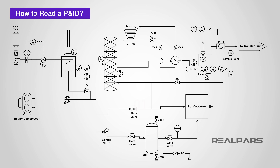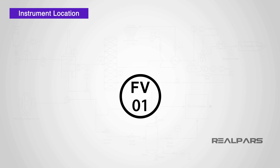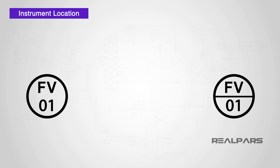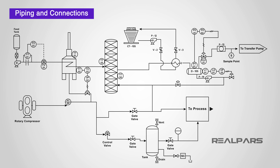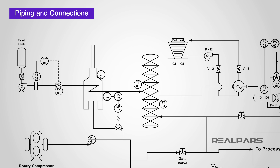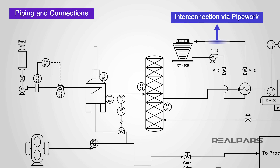Symbols, circles, and lines are used to represent instruments and to show how they are connected to the rest of the system. For our device FV01, represented by a circle, we can also tell from the P&ID where the instrument is located. The presence or absence of a line in the circle determines the location of the physical device. The piping or connection lines also tell us about the instrument — a solid line indicates the connection is via pipework, whereas a dotted line indicates an electrical connection. It is worth familiarizing yourself with the different types of connection symbols, as this can give you an insight into the function of an instrument even before you know its code.